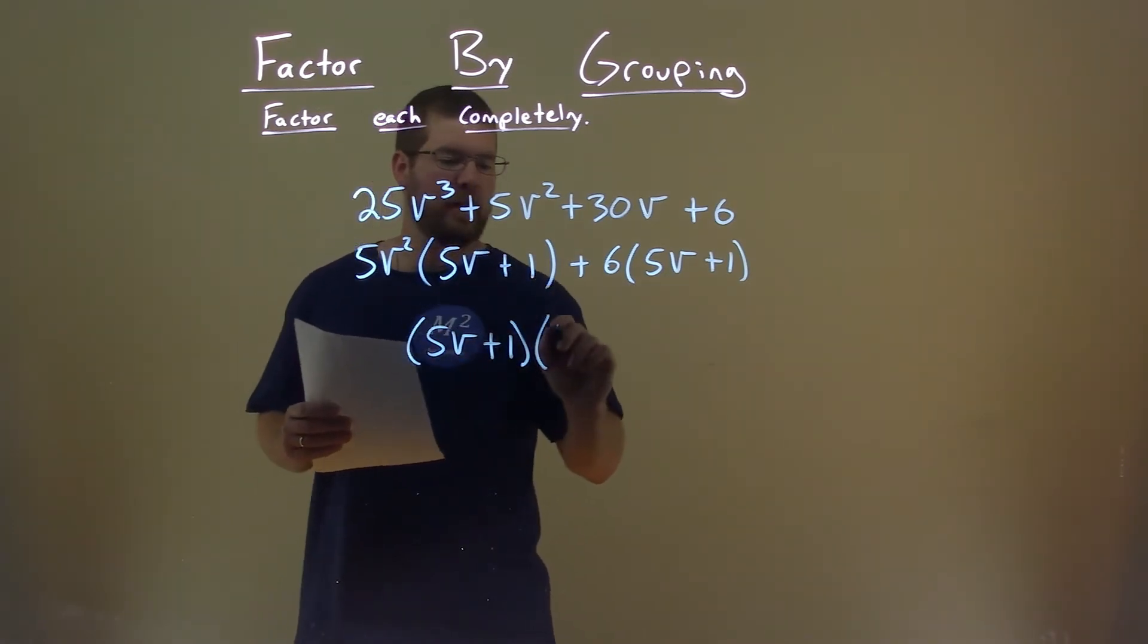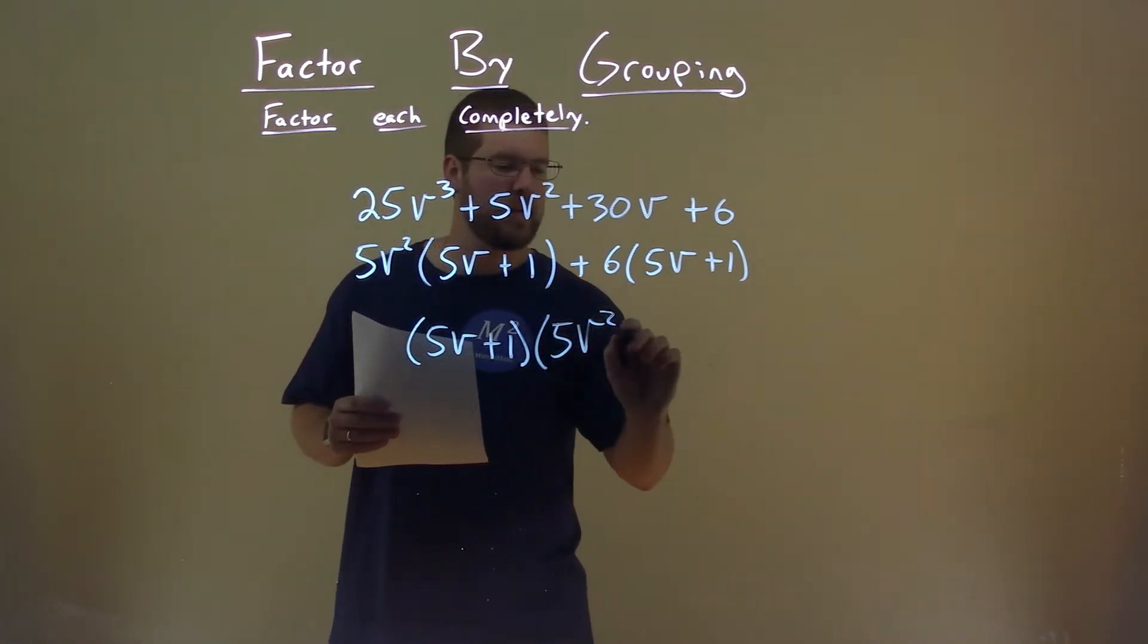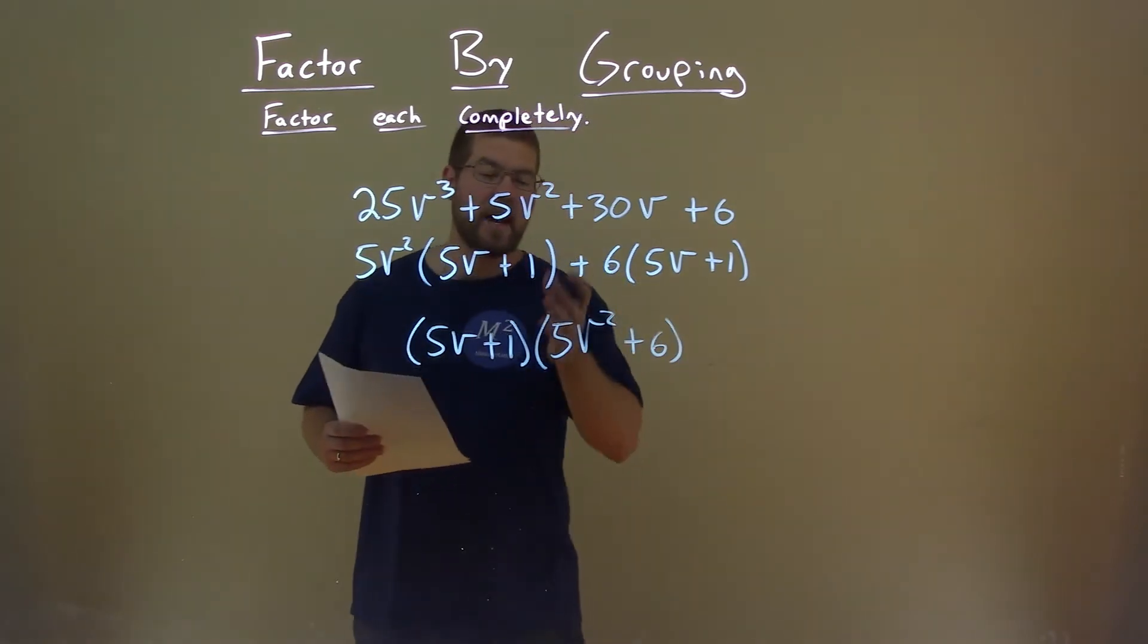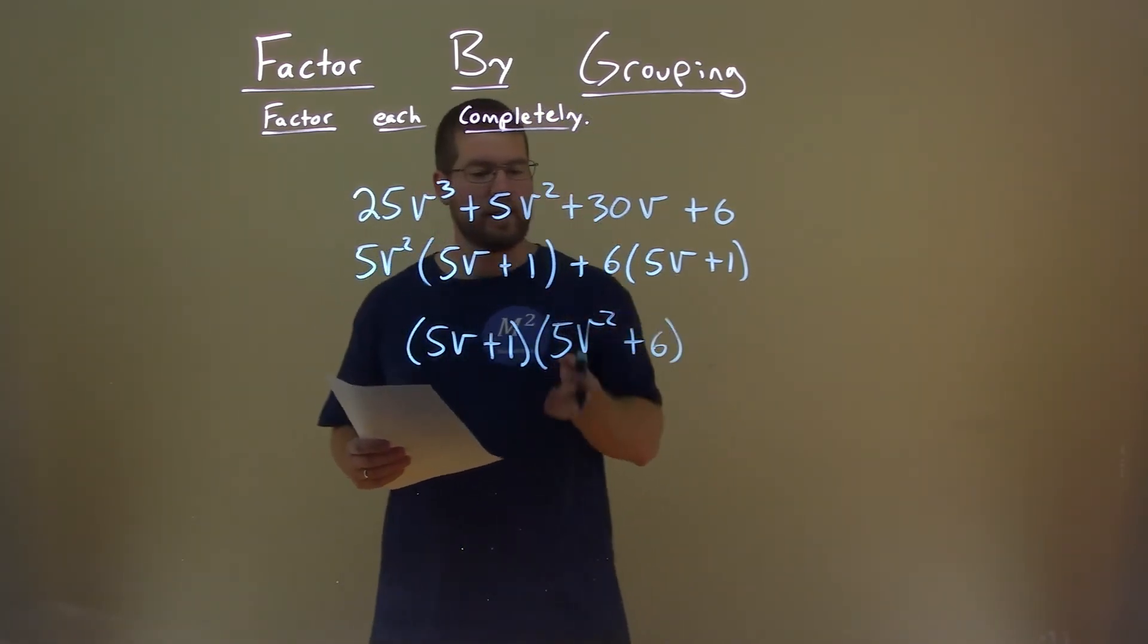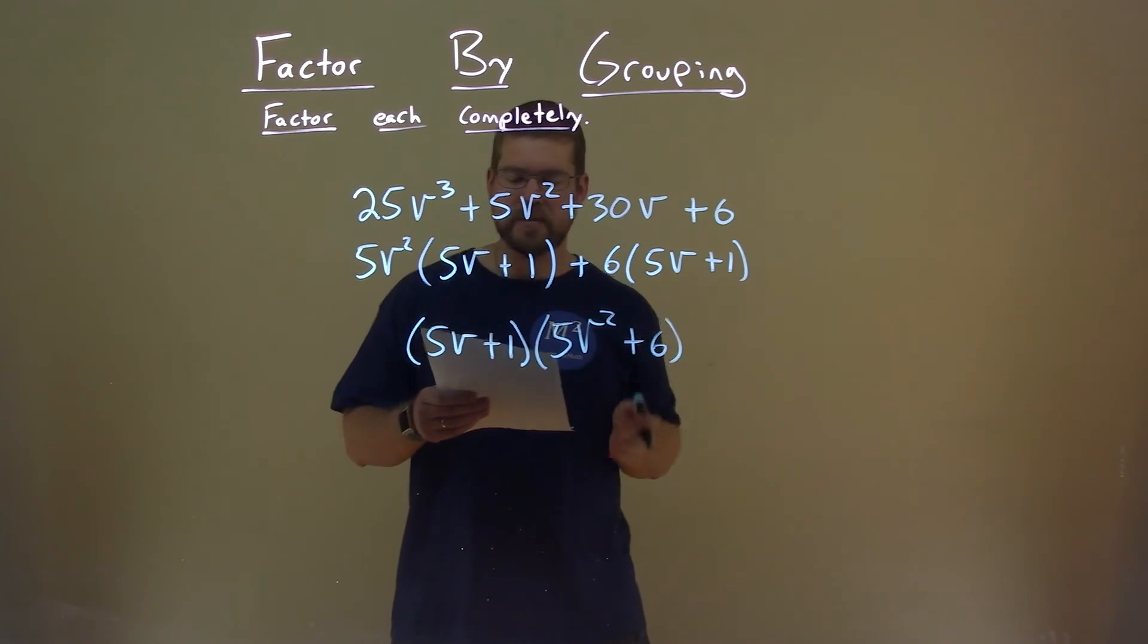We're left with a 5v squared plus 6, and now we have our final answer. 5v plus 1 times 5v squared plus 6.